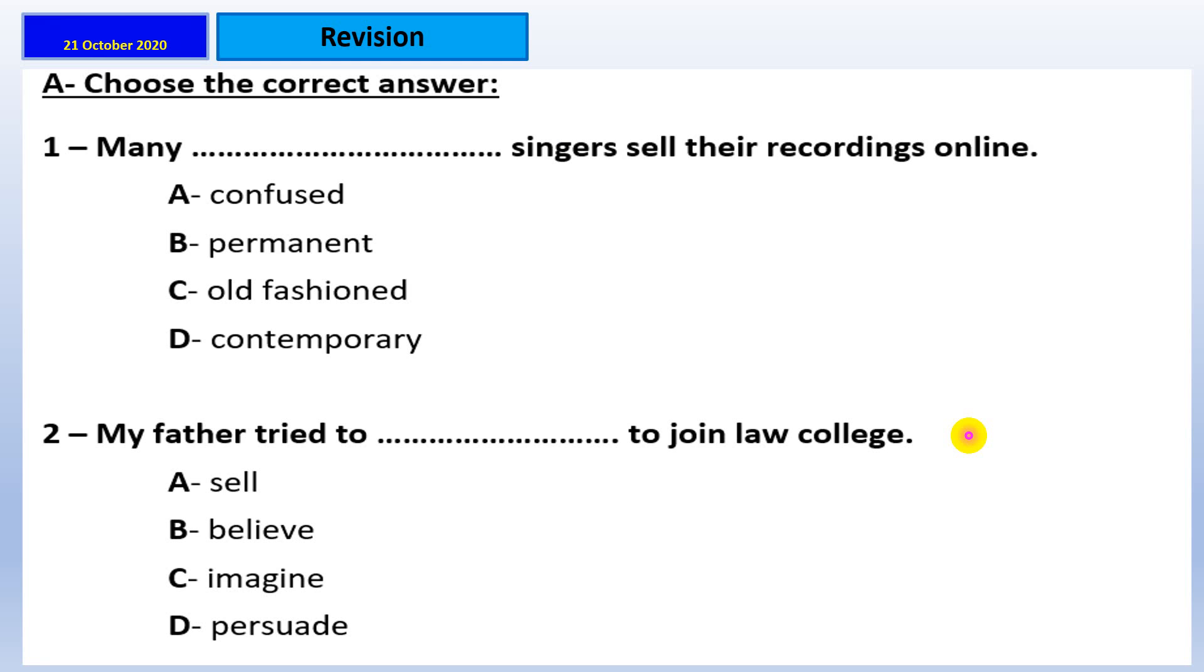He wanted to the little boy when he fell in a big hole. He wanted to what? Flood, leave, rescue, remember. Yeah, he wanted to rescue. That's right. Moving to worksheet number 12. Again, while practicing vocabulary. Many singers sell their recordings online. Confused, permanent, old-fashioned, or contemporary. What do you think about this one? Yeah, contemporary. Means what? That's right, it's modern. Modern singers, they sell their recording online. My father tried to join law college. Persuade, imagine, or pursue. What do you think about this one? Yeah, he wanted to persuade to join.